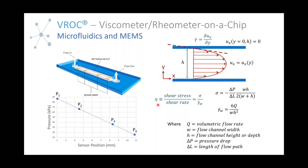For viscosity measurement of battery solutions, we use our Initium OnePlus, our high-throughput automated viscometer. A special high-throughput mode has been developed for the Initium that enables fast screening of 96 samples within 24 hours. This generates a large amount of data that can be used to develop machine learning models or algorithms for improved viscosity prediction.